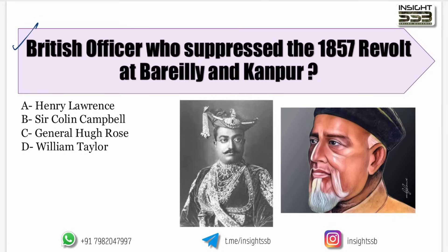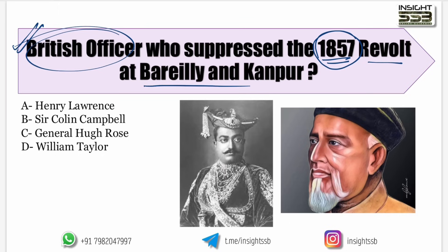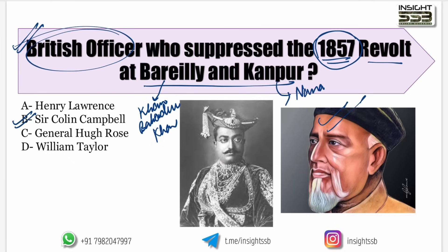Coming to the next question: which British officer suppressed the 1857 revolt in Bareilly and Kanpur? The answer is Sir Colin Campbell. Bareilly was led by Khan Bahadur Khan, who initiated the revolt there, while Kanpur was associated with Nana Sahib.